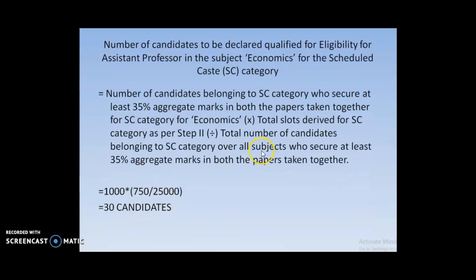Dividing by the total number of SC candidates across all 81 subjects who secured at least 35% aggregate in both papers — which is 25,000 — gives us: (1000 × 750) / 25,000 = 30 candidates. So 30 candidates will be selected as eligible for assistant professor in Economics for the SC category. This is how NTA calculates the total qualified candidates for assistant professor eligibility. For JRF calculation, we will see that in the next video.